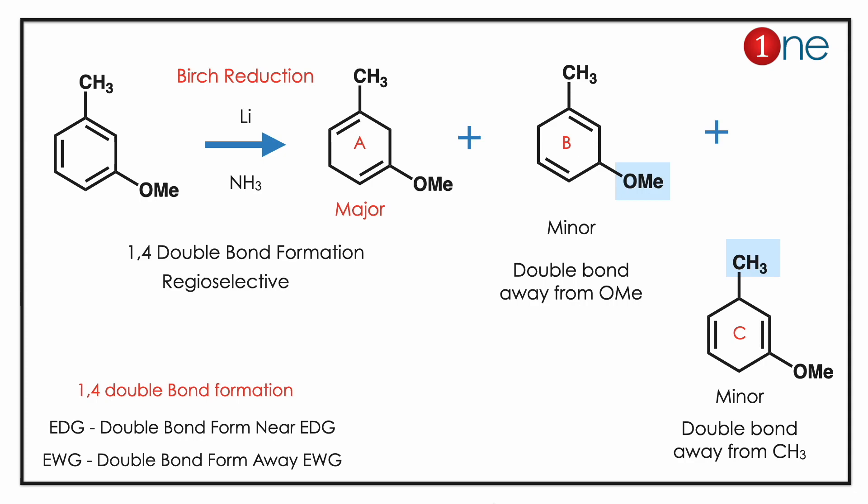So among the three possibilities, only A has the major product, because the double bond is near both electron-donating groups — methyl and methoxy. The other two options place the double bond away from either the methoxy or the methyl group. The key concept here is Birch reduction: the 1,4-diene regiochemistry is dictated by the functional groups present.